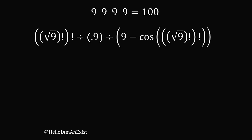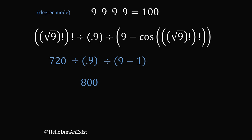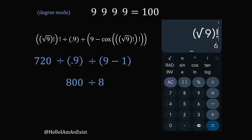Here's another clever solution: take square root of 9, factorial, then factorial again — that whole thing is 720. Divide by 0.9, giving 800. Then divide by (9 minus cosine of 720). The cosine of 720 degrees equals 1, so the denominator is 9 minus 1 equals 8. We're taking 800 divided by 8, which equals 100. We can input this into the calculator to verify it actually works.